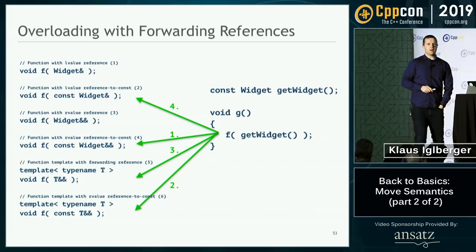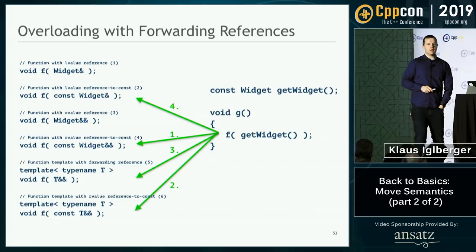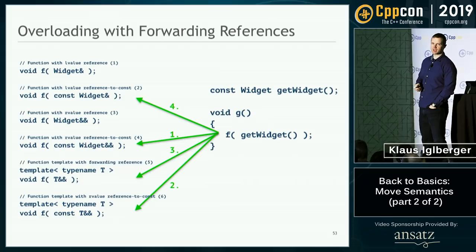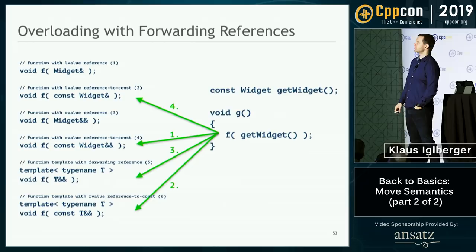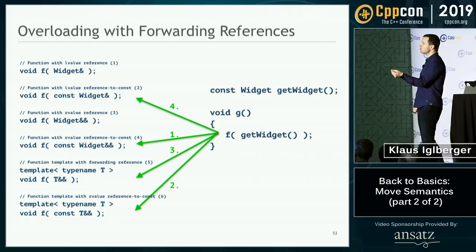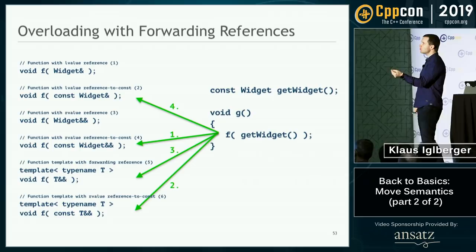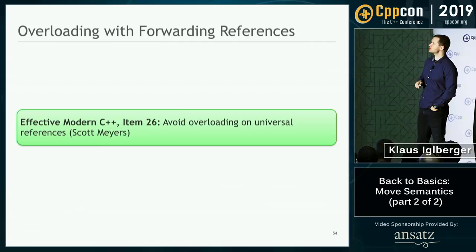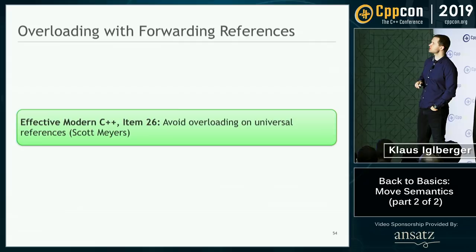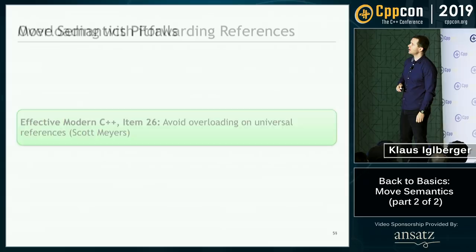Overloading with forwarding references is pretty complicated and probably best avoided. make_unique works as a single function — that's where forwarding references shine. My personal advice: if you want to solve the perfect forwarding problem, use forwarding references — there's nothing better — but do not use them randomly. Use them for a specific reason, know what you're doing. This is essentially Scott Meyers' advice from Effective Modern C++, Item 26: avoid overloading on universal references.